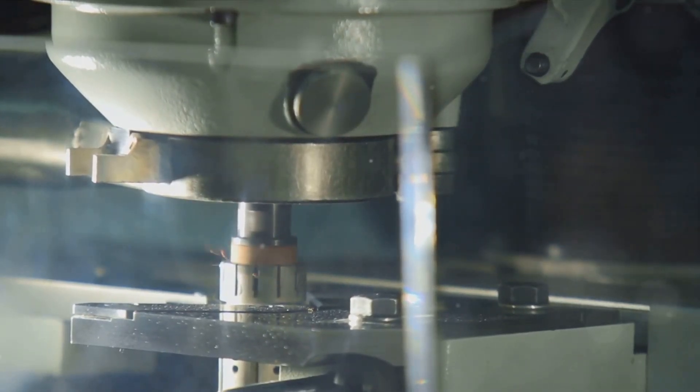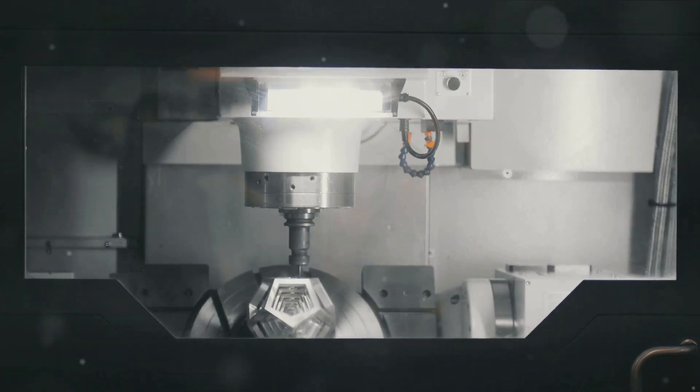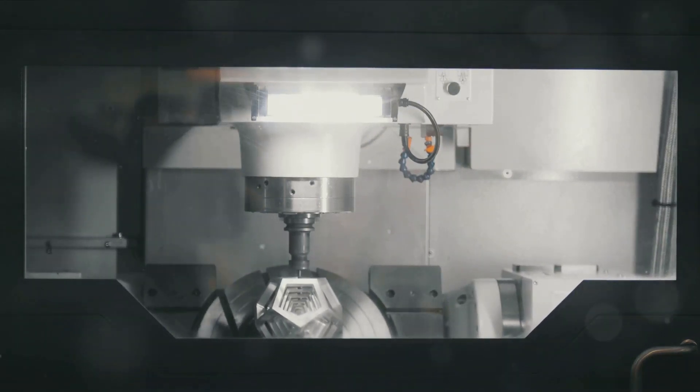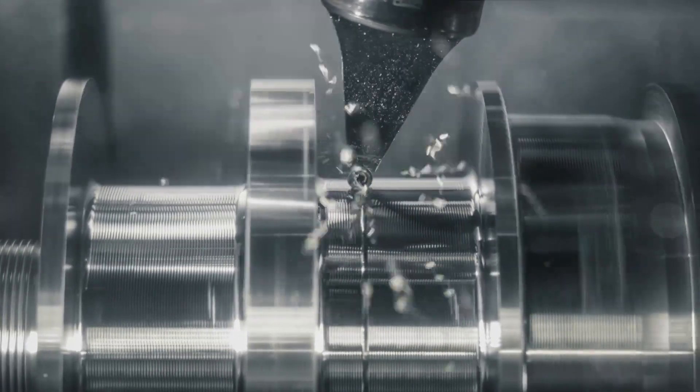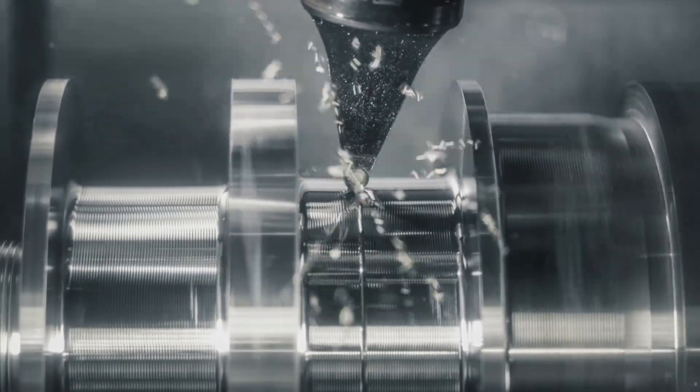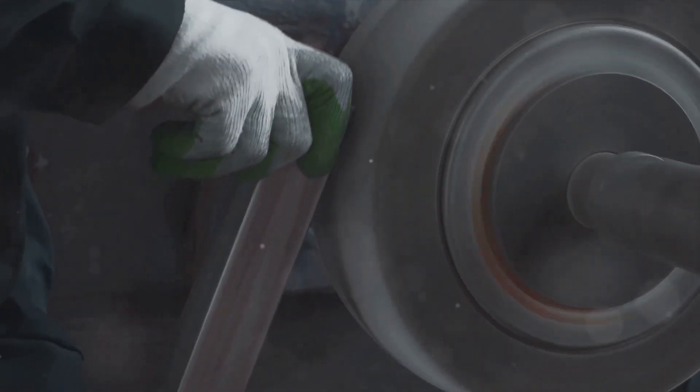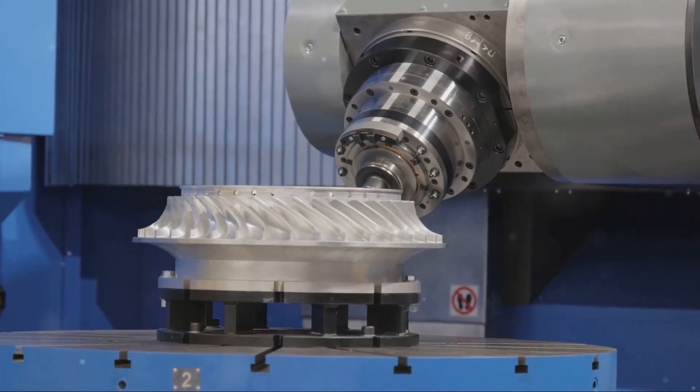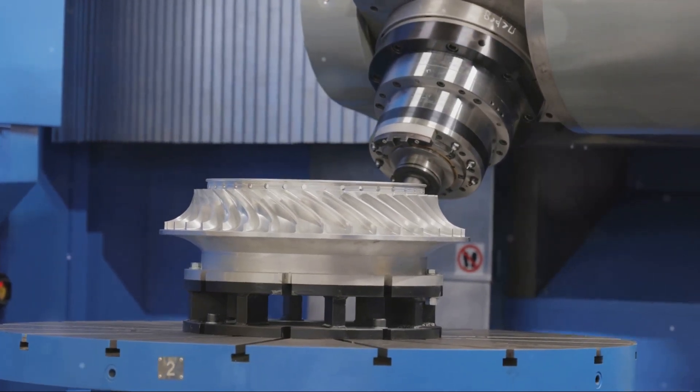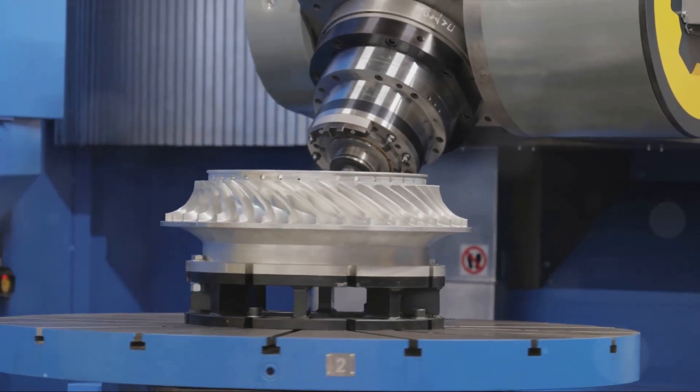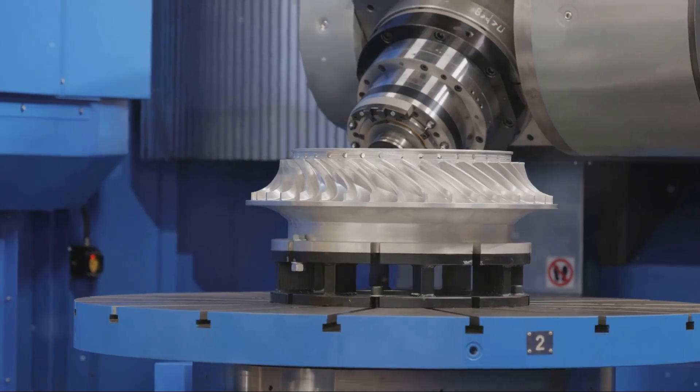Now, you might be wondering, where have I seen knurled surfaces? The answer is everywhere. From the grip on your favorite pen to the knobs on your stove, knurling is an integral part of our daily lives. It provides a non-slip surface that makes handling objects easier and safer. So, the next time you turn a knob or hold a tool, take a moment to appreciate the intricate texture beneath your fingertips. That's the work of a knurling machine, a silent yet vital player in the world of machinery.